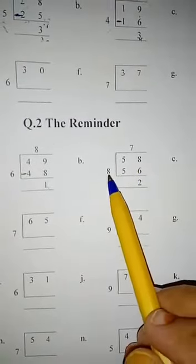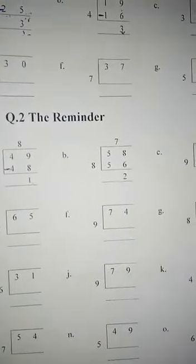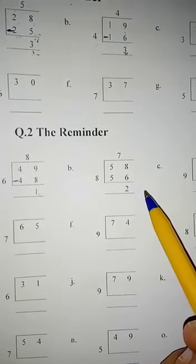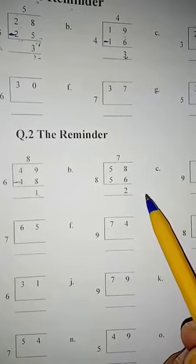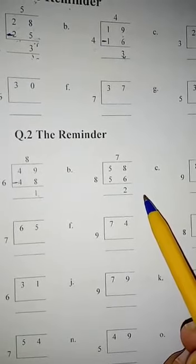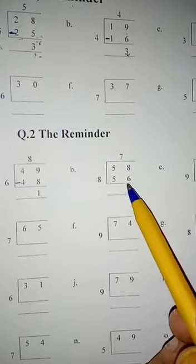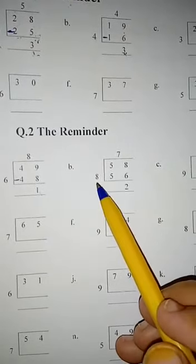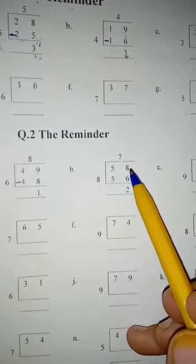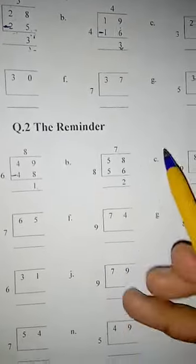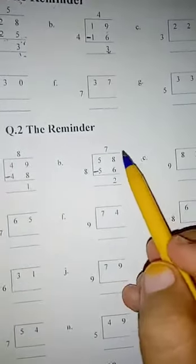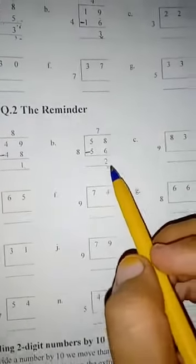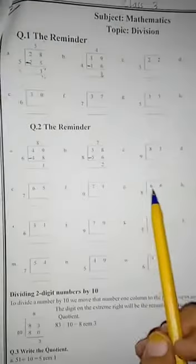Now we will solve the next question: 58 divided by 8. First, we read the table of 8: 8 ones are 8, 8 twos are 16, 8 threes are 24, 8 fours are 32, 8 fives are 40, 8 sixes are 48, 8 sevens are 56, 8 eights are 64. Since 8 sevens are 56, which is less than 58, we subtract: 58 minus 56. 8 minus 6 is 2, so the remainder is 2.